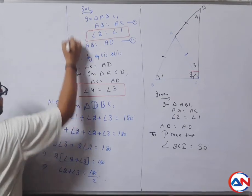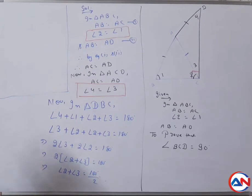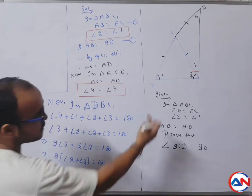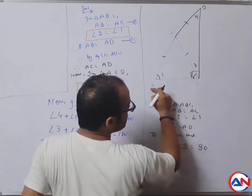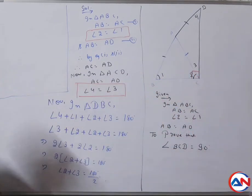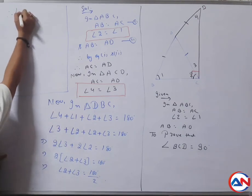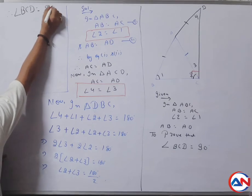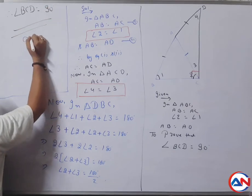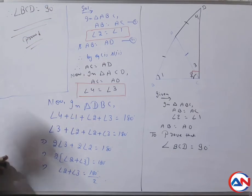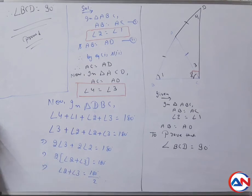Now, angle two plus angle three means angle BCD. Can I write? So therefore, angle BCD equals to 90 degrees. Do you understand? Okay, any doubt?